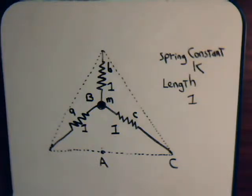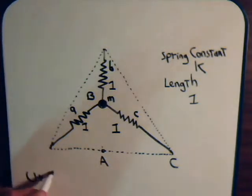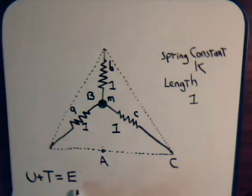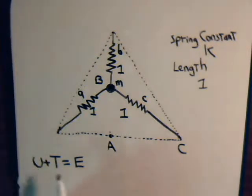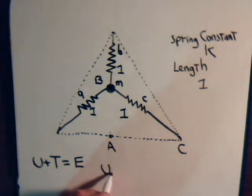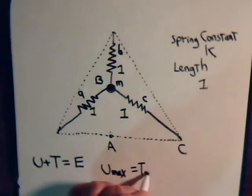In video number six we determined that for a harmonic system the potential energy plus the kinetic energy equals the total energy, which is always constant. So if we're at a point where the potential energy is zero, the kinetic energy is at a maximum, and vice versa. We also showed that the maximum potential energy equals the maximum kinetic energy.